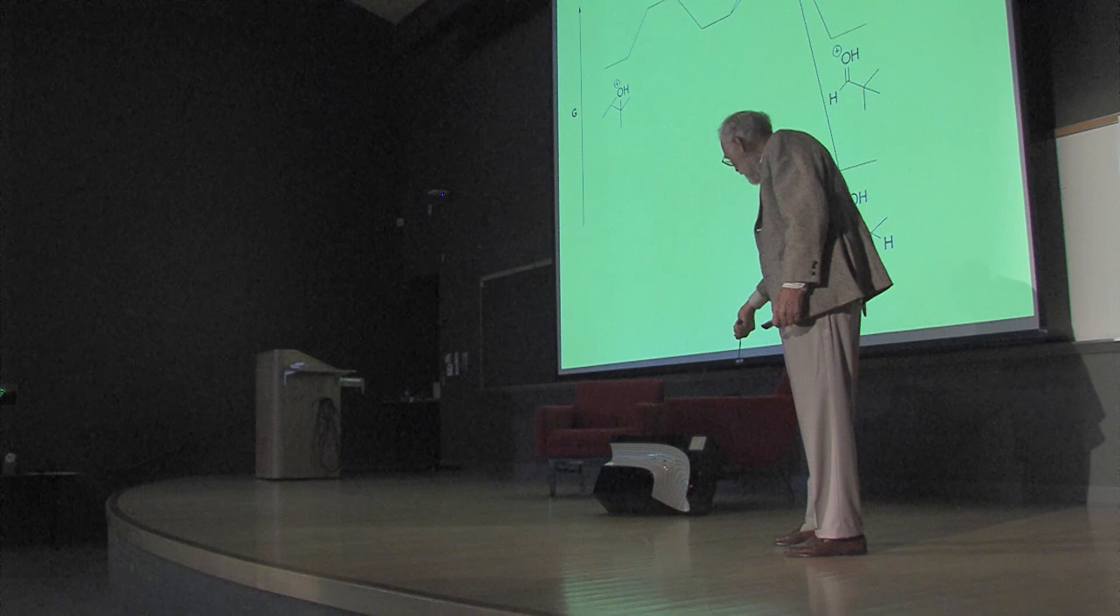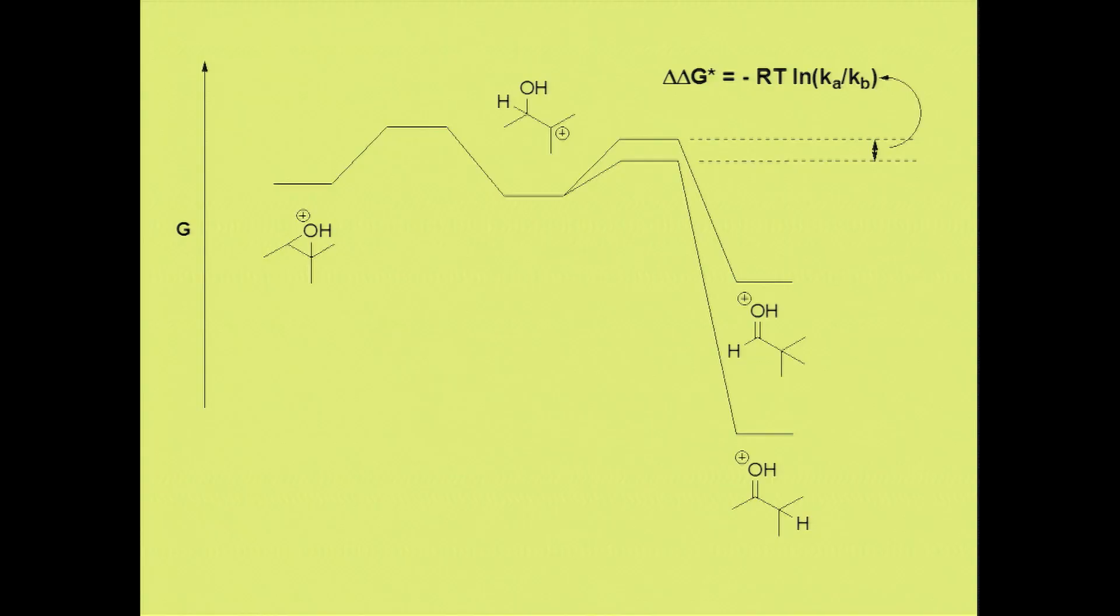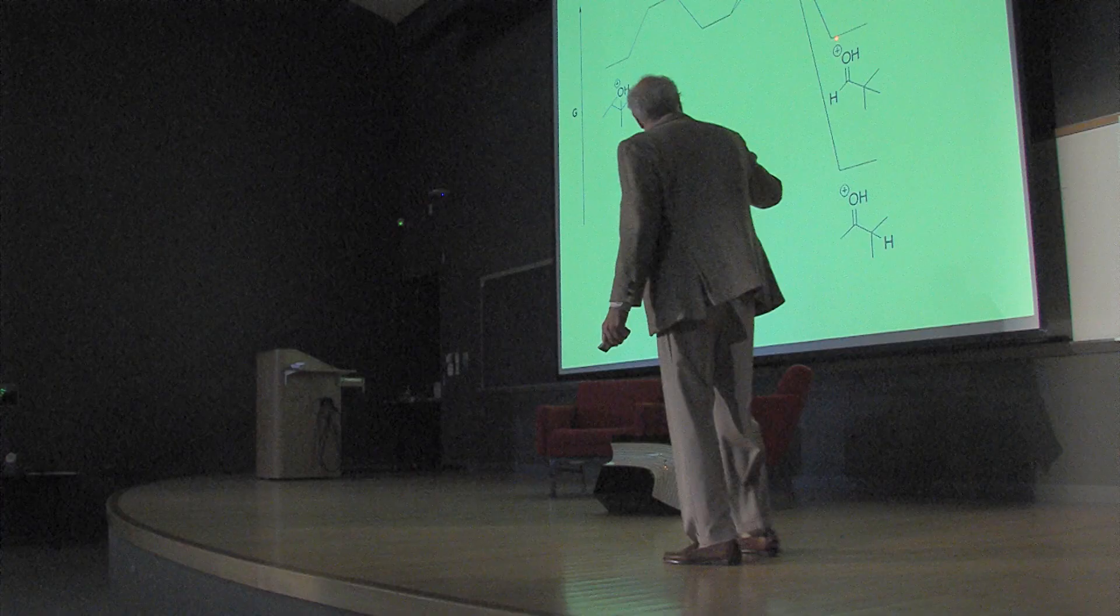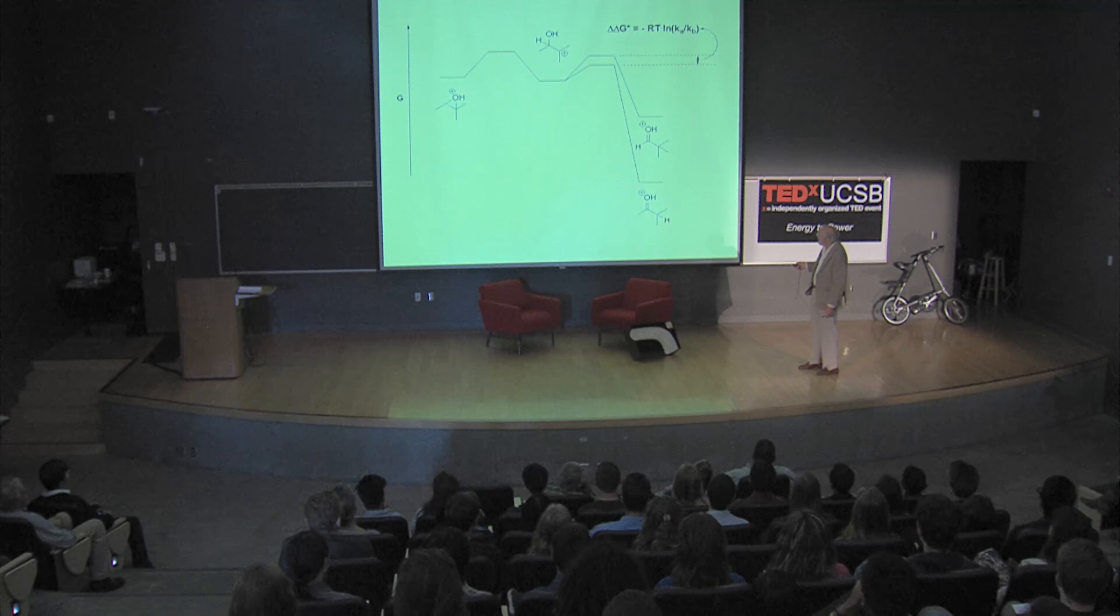This shows a similar energy diagram for a more complicated reaction. We start at a valley, go up to a transition state, down to another valley for an intermediate that's short-lived, then over two transition states to two products. This is particularly interesting when you've got more than one product possible. You want to be able to predict which product you're going to get.